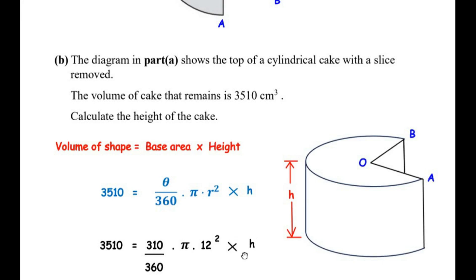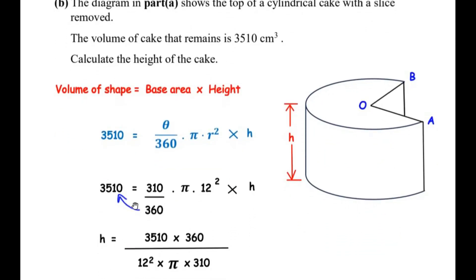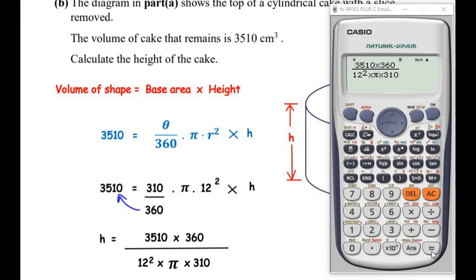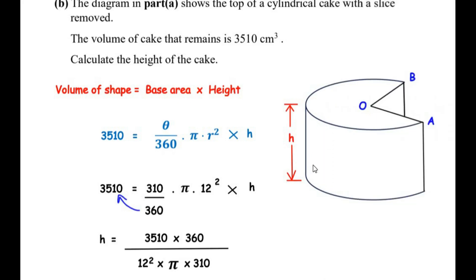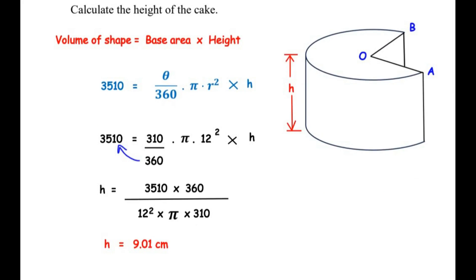Substituting the values: 3510 equals 310 over 360 times π times 12 squared times h. Rearranging to make h the subject: h equals 3510 times 360 divided by 310 times π times 144. This gives the height of the cake as 9.01 centimeters.